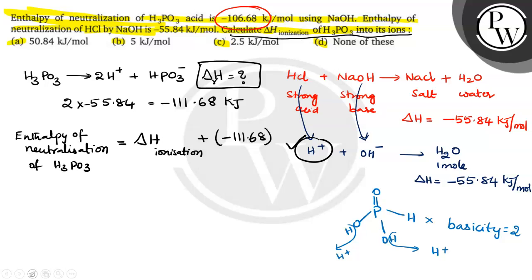Now, we need to find out delta H ionization and this value already it is given. Enthalpy of neutralization is given. I already circled in the question. That is minus 106.68 is equal to delta H ionization plus minus 111.68 kilojoules. 111.68 minus 106.68 that is equal to 5 kilojoules per mole.